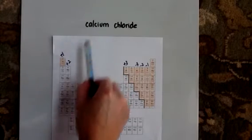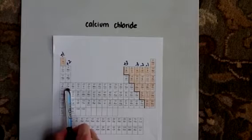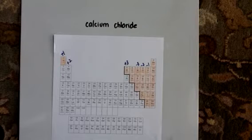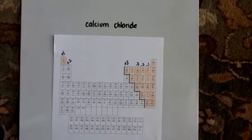We look and we find that calcium is on the left-hand part of the periodic table. It's a metal. Chlorine is over here. It's a non-metal. So since it's a metal and a non-metal, we know this compound is ionic.